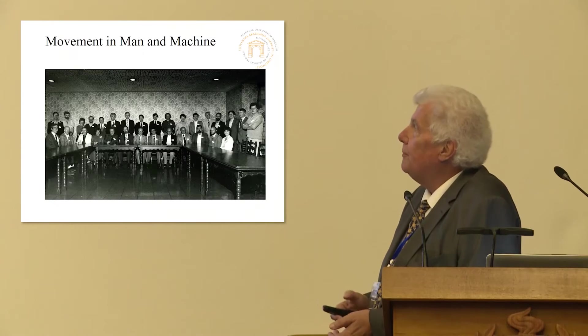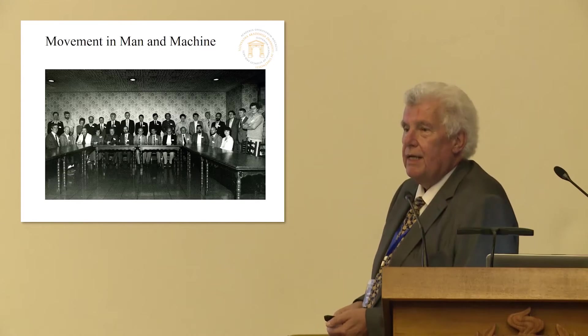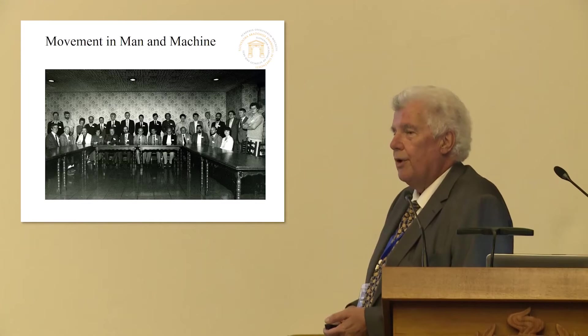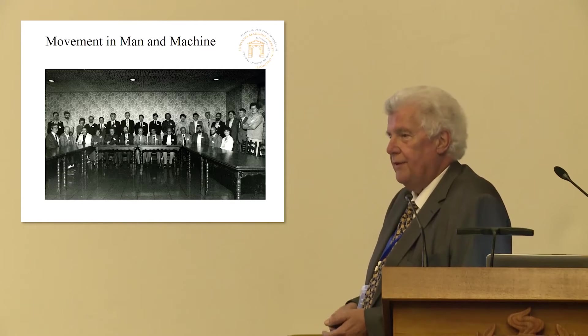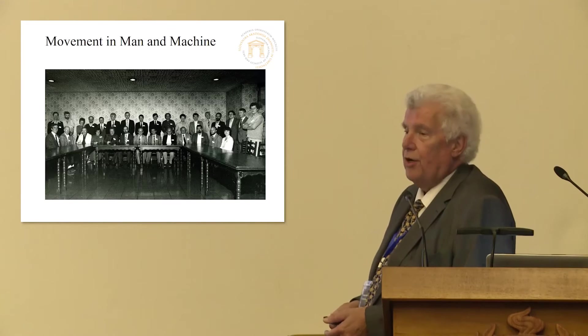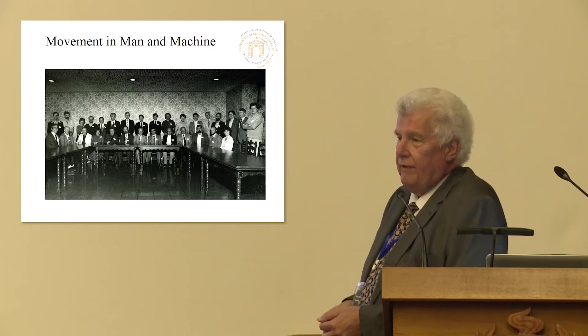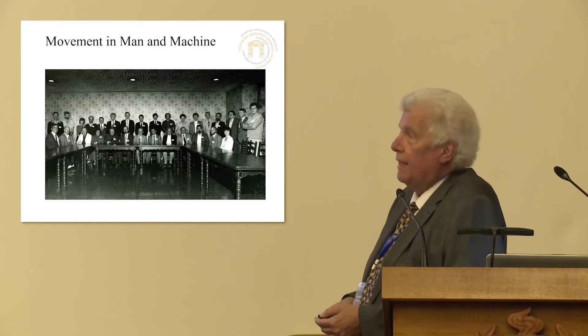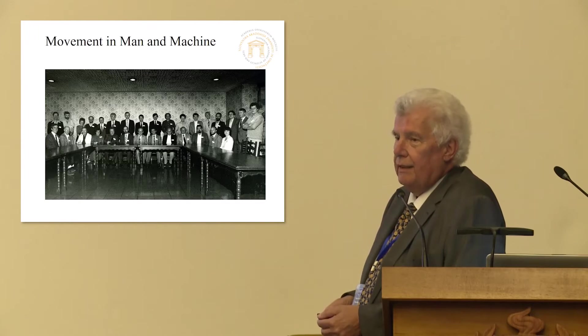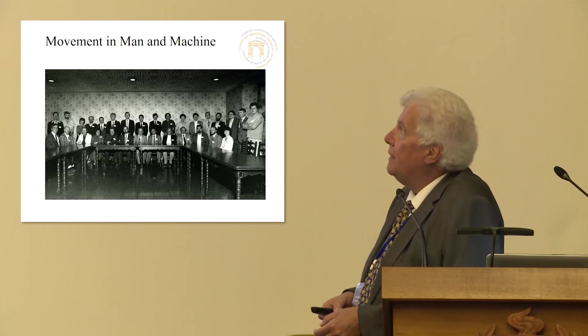Now I will make a big jump from Mihailo Pupin to 1982, when the National Academy of Sciences in United States of America decided not anymore to support single visits of individuals from Yugoslavian academies, but instead to organize a joint meeting. And this joint meeting was the meeting of National Academy of Sciences and Council of Yugoslav Academies, which was active at that time. And this was exactly what I'm talking about, bioengineering and robotics. And the title of the meeting was Movement in Man and Machine.